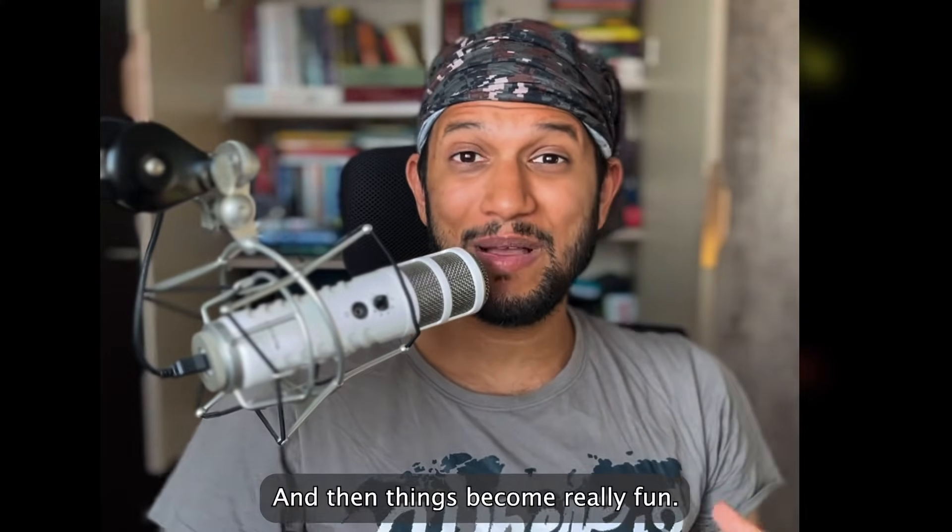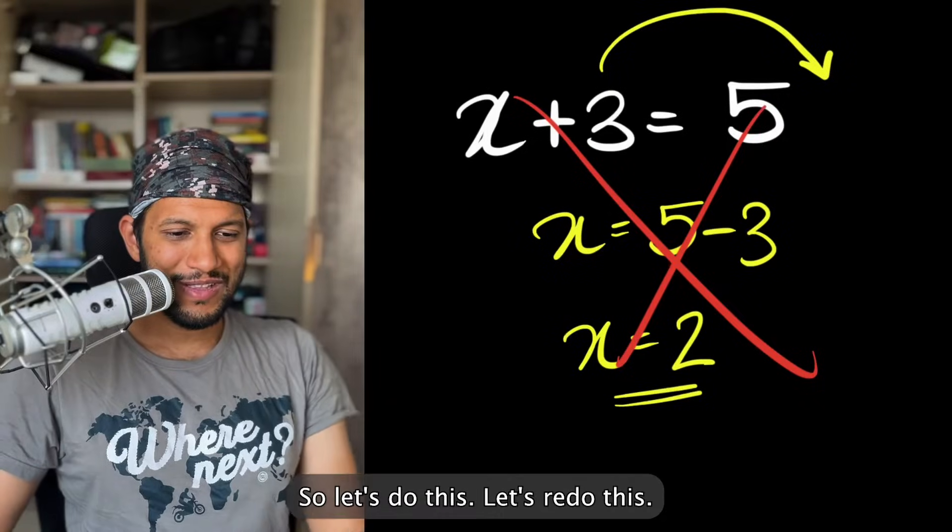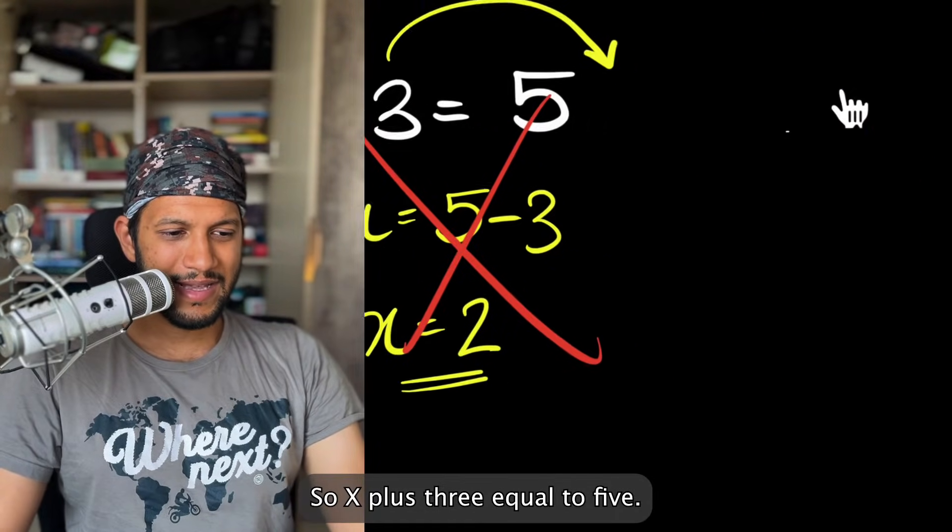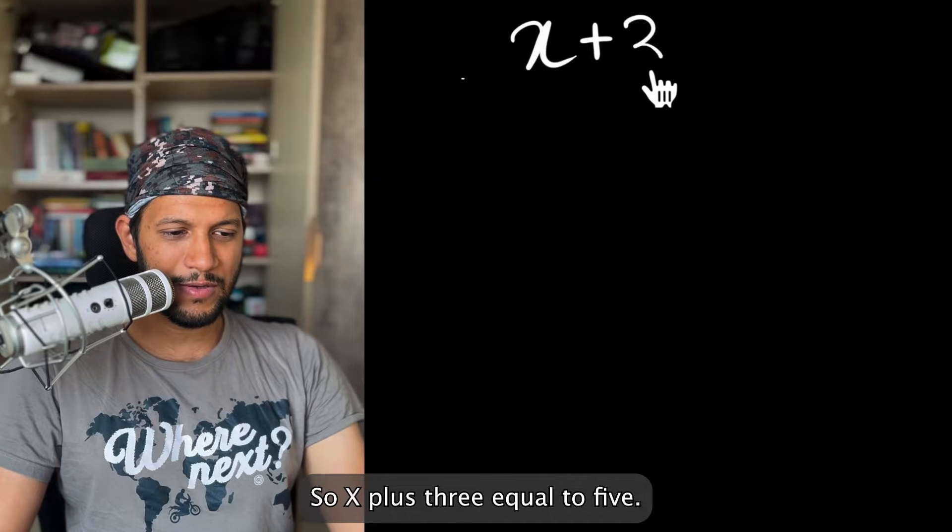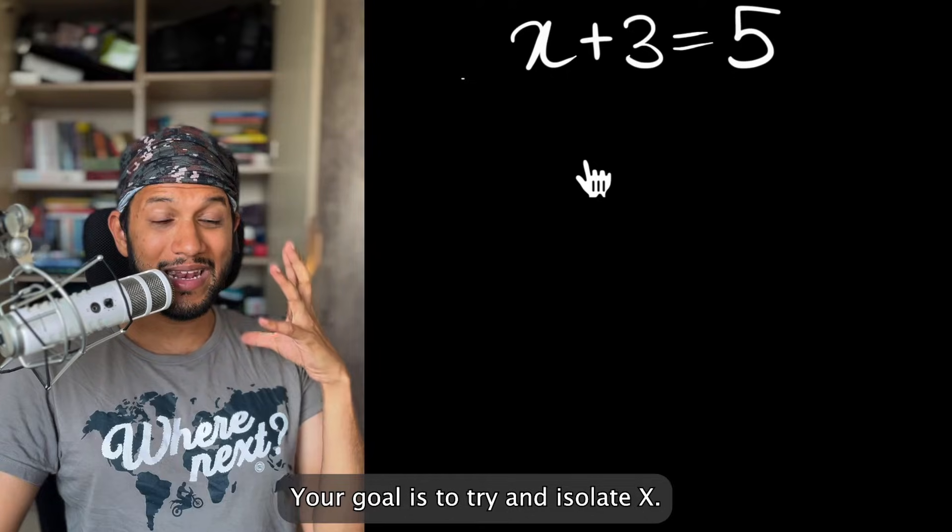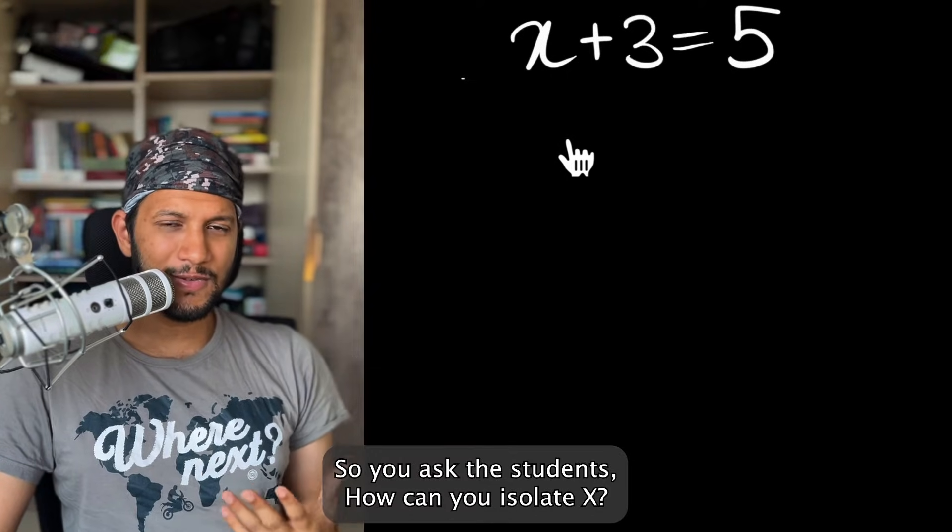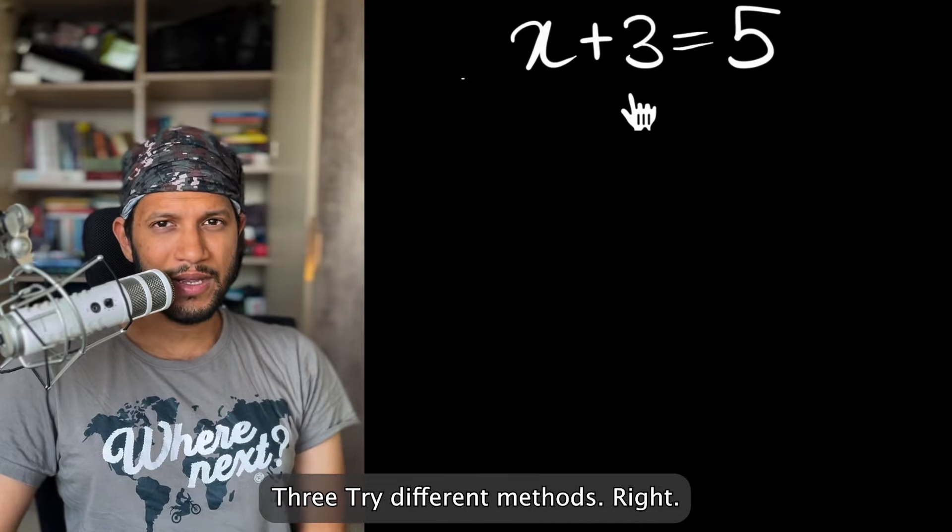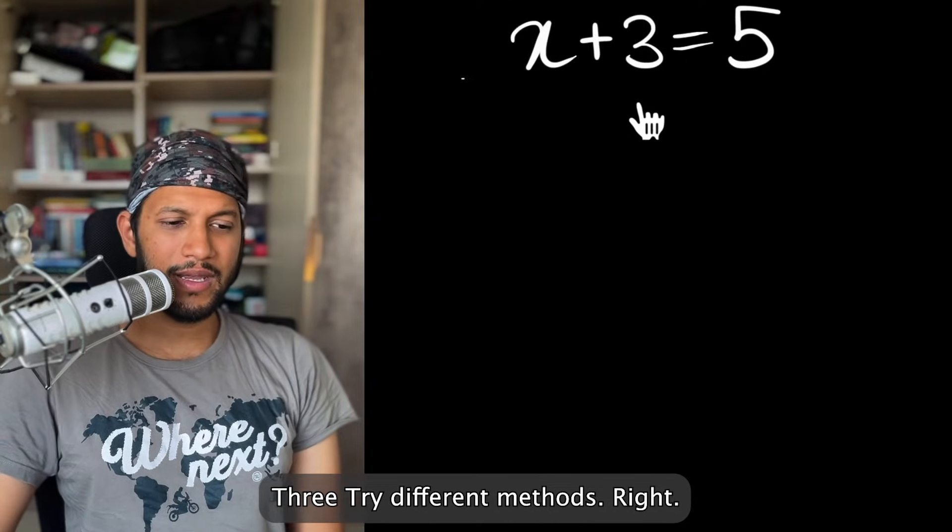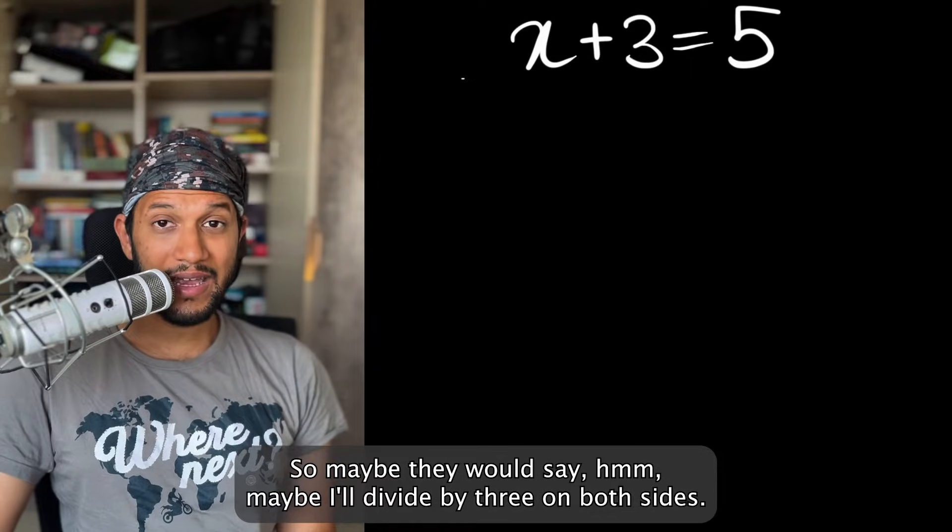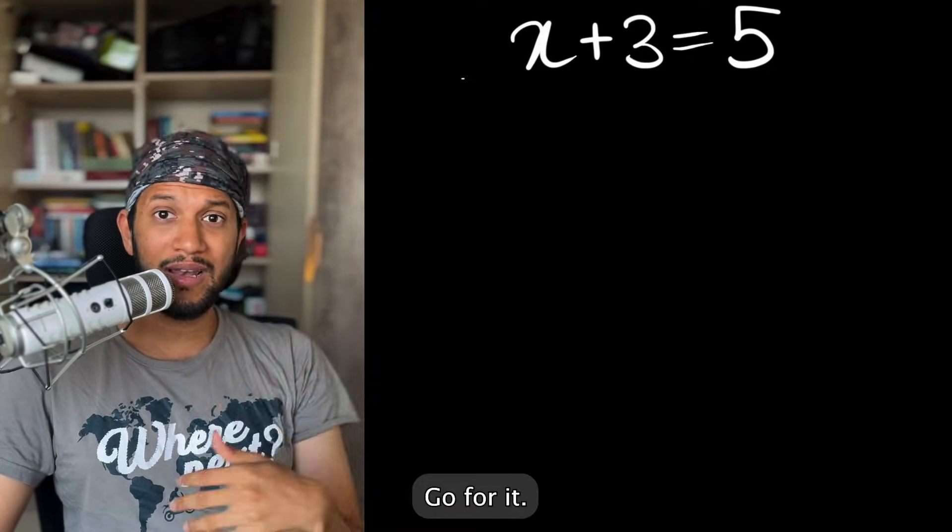And then things become really fun. So let's redo this. X plus three equal to five. How do you find X? Your goal is to try and isolate X. So you ask the students, how can you isolate X? How can you get rid of that three? Try different methods, right? So maybe they would say, hmm, maybe I'll divide by three on both sides. Go for it. Let them do that.